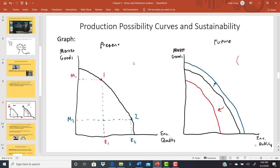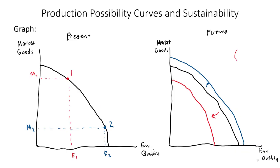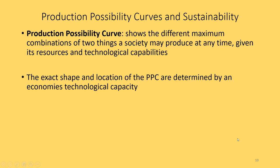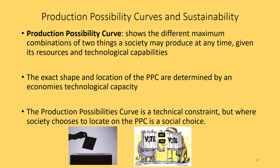The exact shape and location of the production possibilities curve is determined by an economy's technological capacity. The better the technology, or the more resources we discover, the more that curve will shift outward. That determines where the curve is. But whether we are economy one or economy two on that curve — where we choose to locate on the production possibilities curve — is more a matter of social choice, whether we choose to produce more market goods with less environmental quality, or fewer market goods with more environmental quality.